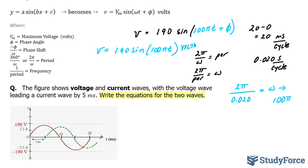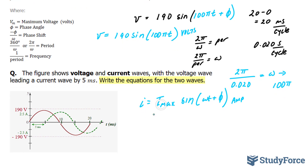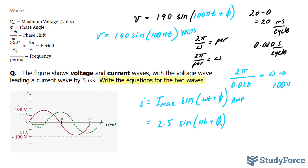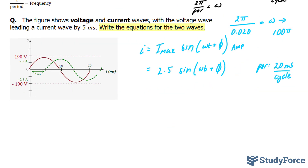Next, I'll model the alternating current. The formula for alternating current using the sine function is i equals i-max sine of omega t plus phi. The green dashed wave has a maximum amplitude of 2.5, so we replace that: 2.5 sine omega t plus phi. It also has a period of 20 milliseconds per cycle — subtracting 5 from 25 gives 20. Since the period is the same, it has the same angular velocity: 100 pi. So our function is 2.5 sine of 100 pi t plus phi.